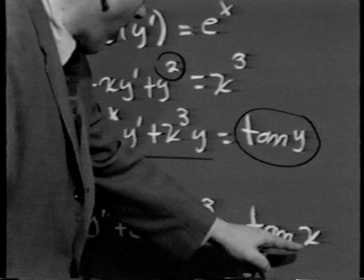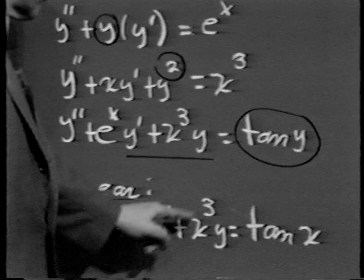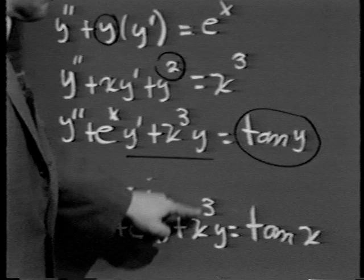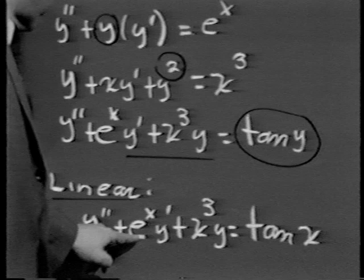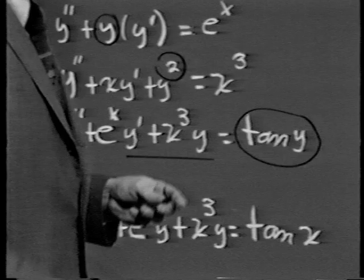Don't get caught in a psychological hang-up here. When I say linear, it's modifying the equation, not what the coefficients look like. Certainly we don't think of e to the x, x cubed, or tangent x as linear functions. The coefficients do not have to be linear functions of x — they have to be functions of x alone. It's the equation that's called linear.